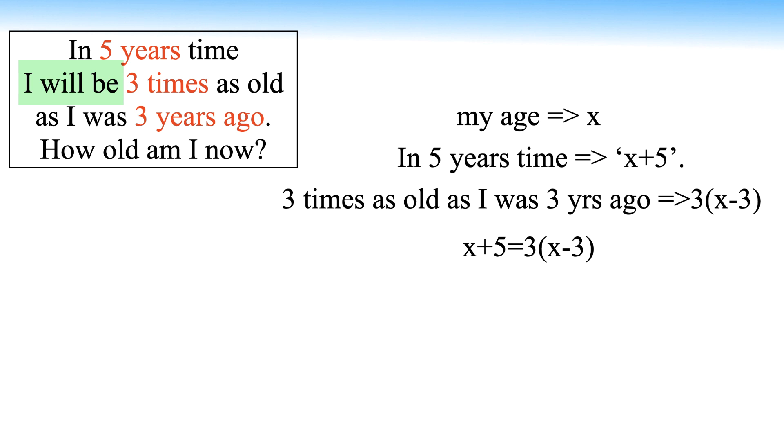So the equation becomes x plus 5 equals 3 times x minus 3. Solving for x, the equation becomes 3x minus 9 equals x plus 5. On further simplification, 2x minus 9 equals 5, 2x equals 14, and finally x equals 7.